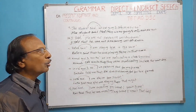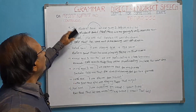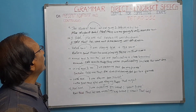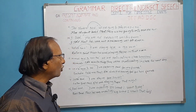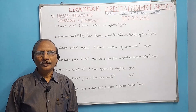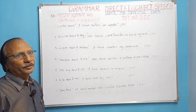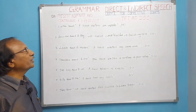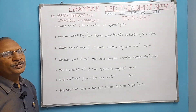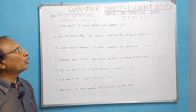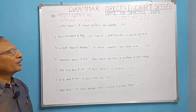In this video we have discussed sentences on present indefinite and present continuous — how to change from direct to indirect speech. I hope you have understood. Now let us discuss sentences on present perfect. When a sentence is in present perfect, we change it into past perfect.